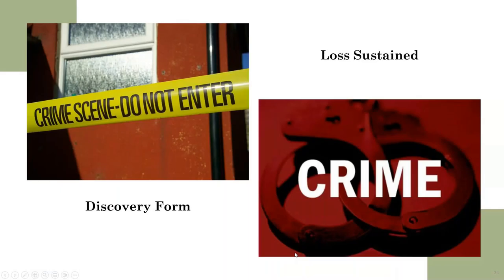There are two ways of writing commercial crime coverage — the loss-sustained form and the discovery form. Additional information including a cheat sheet and a prerecorded webinar explaining the difference are available on the website for registered users.